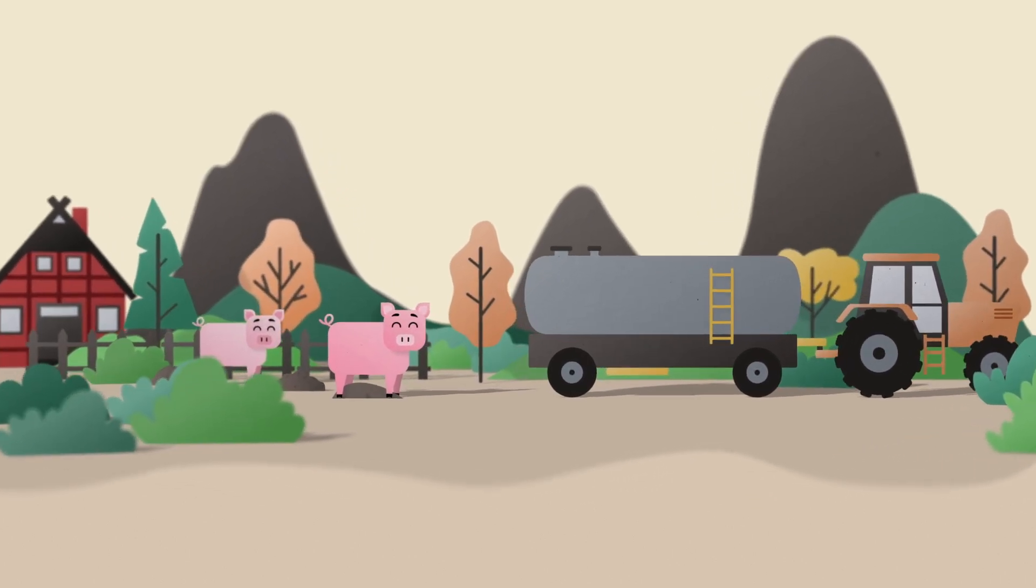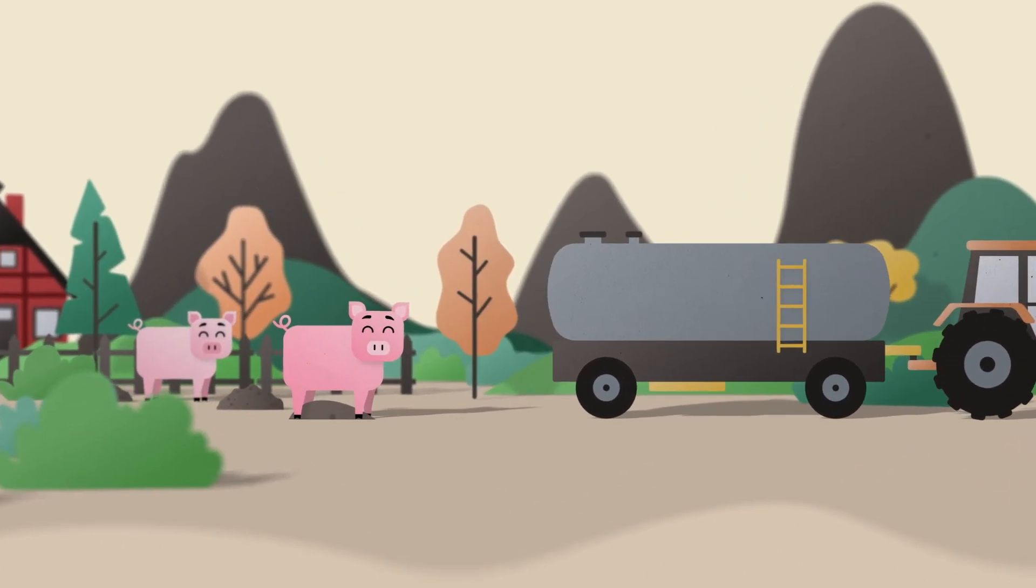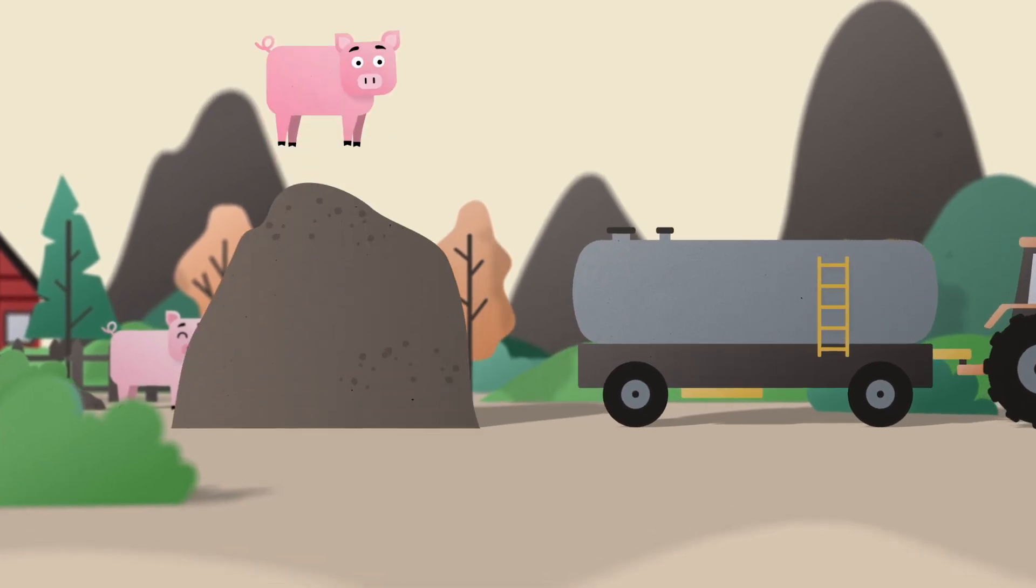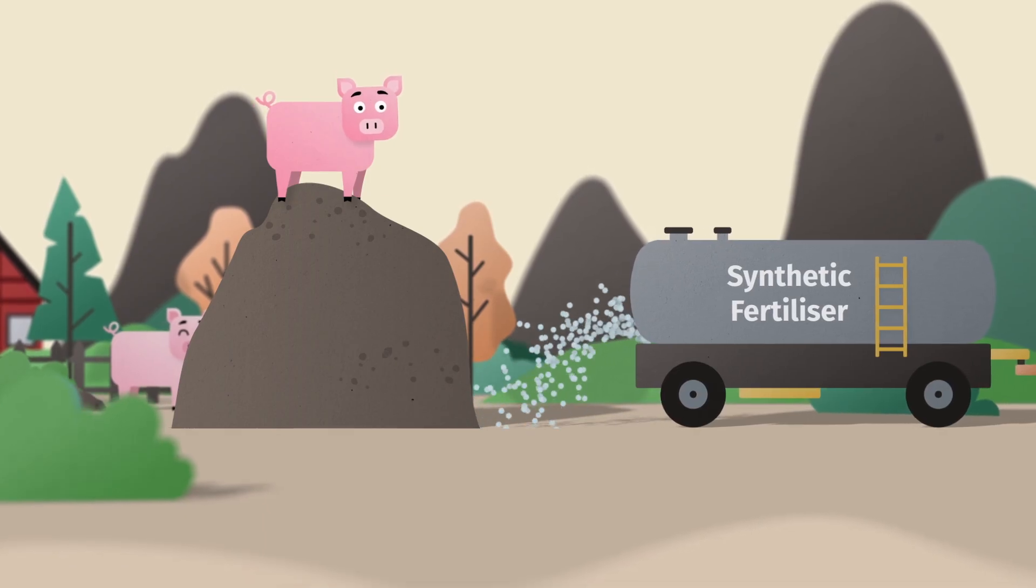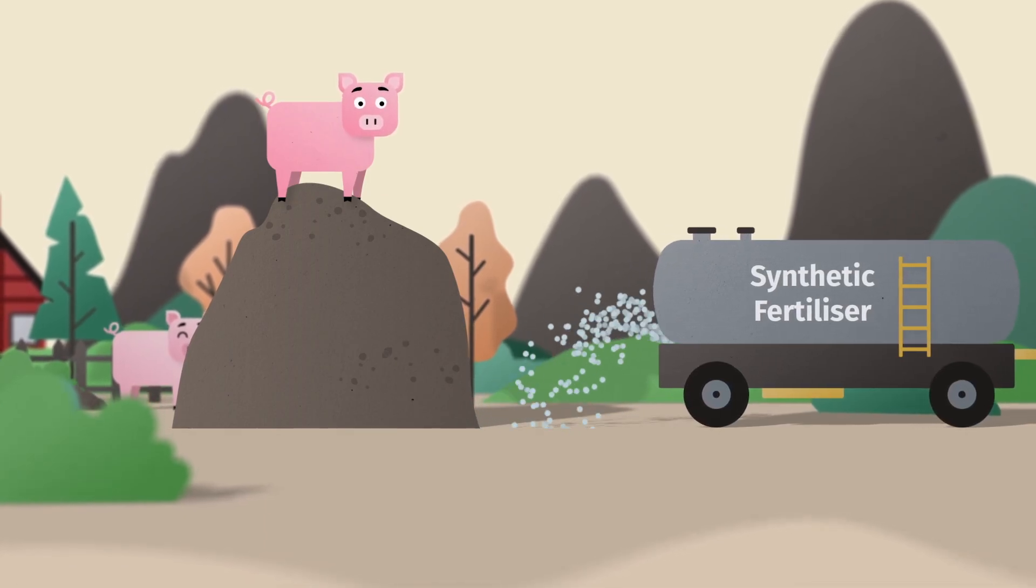Livestock-intensive regions like Flanders face a nutrient paradox. Too much manure here? High demand for synthetic fertilizers there. This imbalance causes environmental and economic problems.